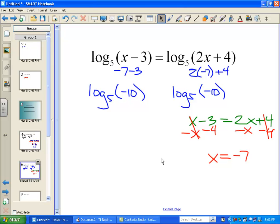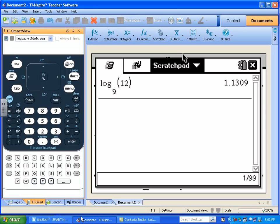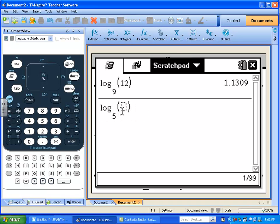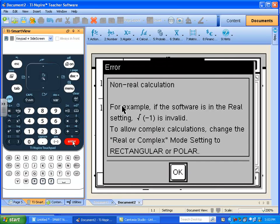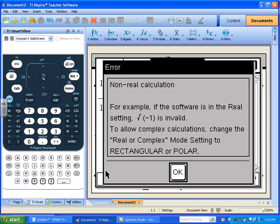And so, we'll just go ahead and put that log base 5 of negative 10 in the calculator just for kicks. Log base 5, negative 10. Whoa, I don't know why it did that. That was weird. But, we'll make sure it's inside parentheses this time. And, okay, wow, now I get a non-real calculation error.